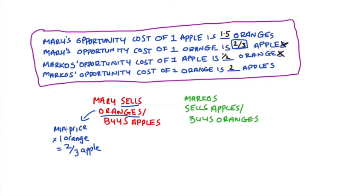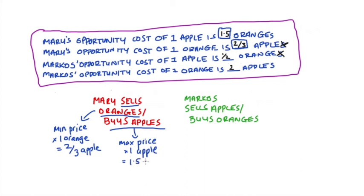If they trade, Mary will also be buying apples from Marcos. Looking at her opportunity cost of producing apples, Mary can make one apple on her own by giving up 1.5 oranges. It follows that the maximum she would be willing to pay for one apple is 1.5 oranges. If the price were any higher, it would be cheaper for her to simply produce the apple herself.